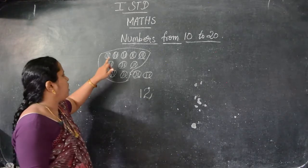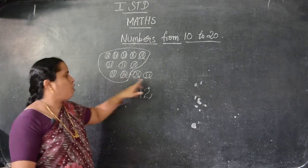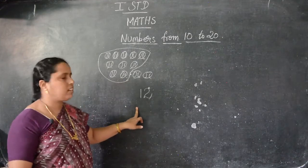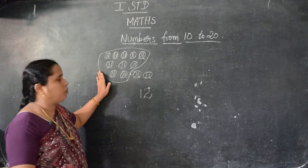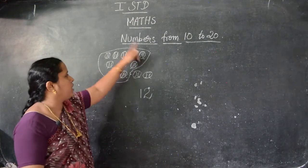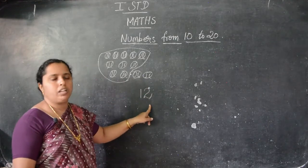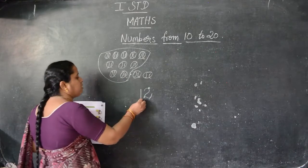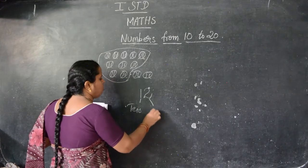Count this one: 1, 2, 3, 4, 5, 6, 7, 8, 9, 10, 11, 12. So how many balls are here? 12 balls. Have you understood children? Grouping — first we have to group 10. How many groups of 10? 1 group. Remaining how many? 2. So we write 2 here. So this number is 12. Here this is 10s and this is 1s.